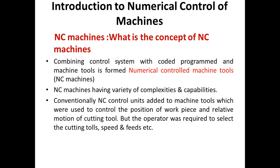This capability to change the program for each new job is what gives NC its flexibility. Numerical control should be considered as a possible mode of controlling operations for any production situation with the following characteristics: similar work parts in terms of raw material, work parts produced in various sizes and geometries, work parts produced in batches of small to medium size quantities, and a sequence of similar processing steps required to complete the operation on each work part.